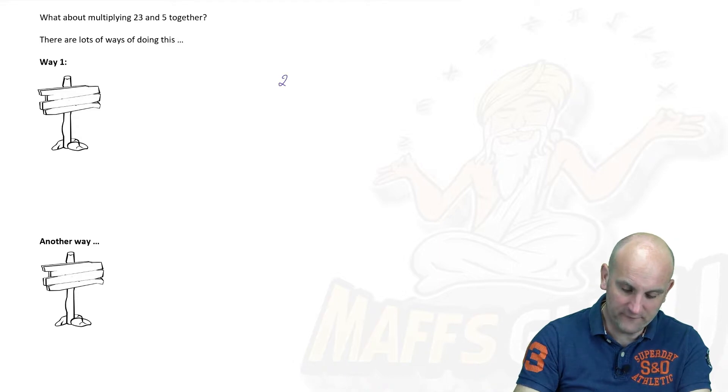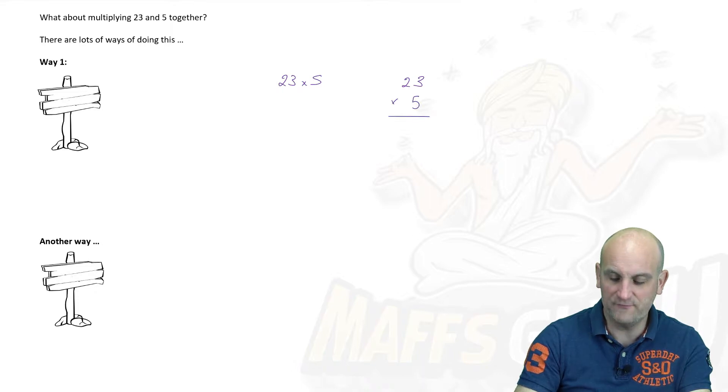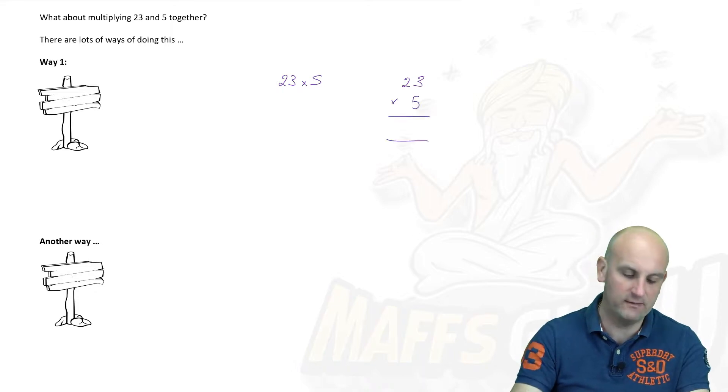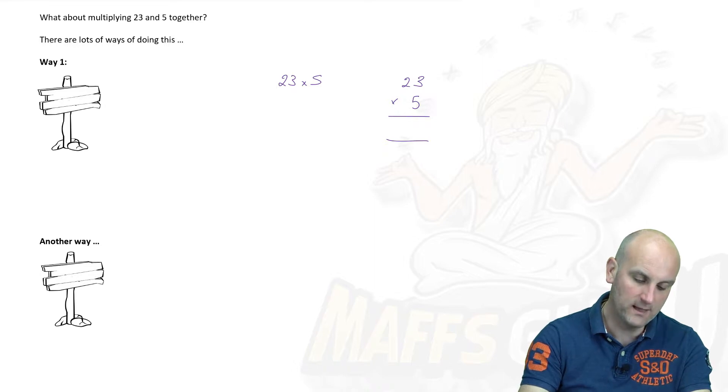Okay, so 23 times 5. Now when I was at school we were told to do 23 and we do times by 5 and we do these little lines there. And then what do we do? We say, well okay, I'm going to do 5 times 3.